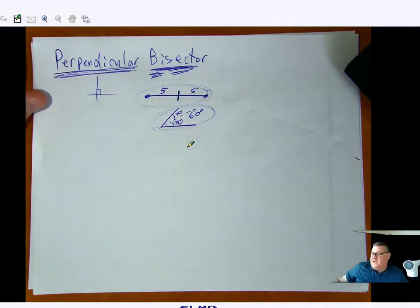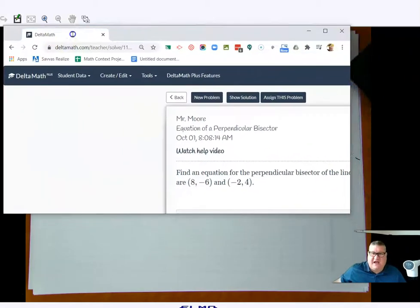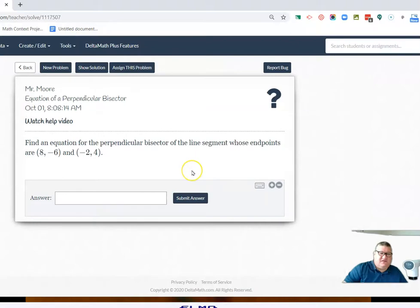Now, if I want a perpendicular bisector, that means it's going to be perpendicular and it's going to cut whatever it is in half. So let's take a look. Let's find an equation for the perpendicular bisector of the line segment whose endpoints are this and this.